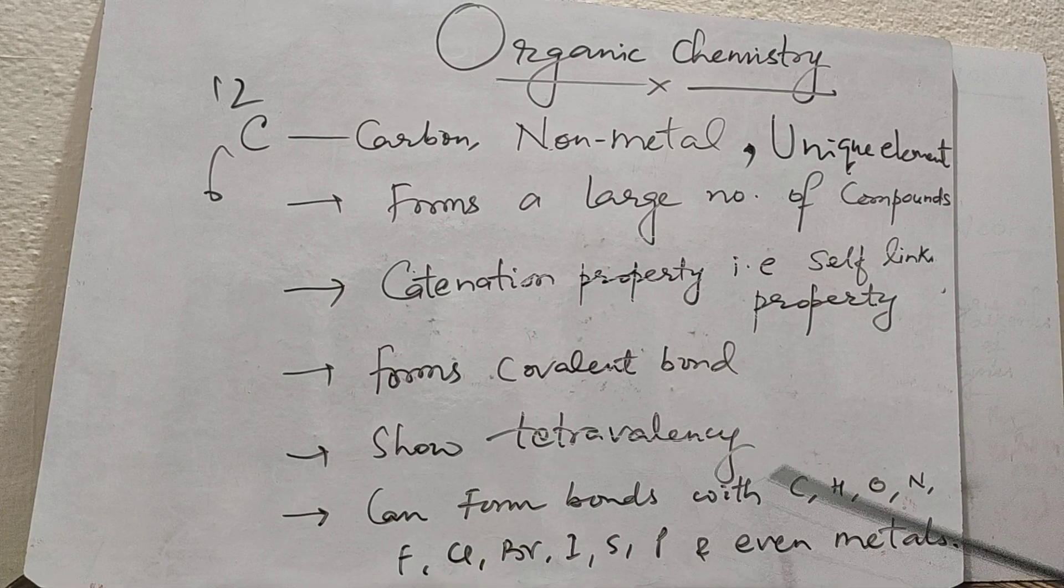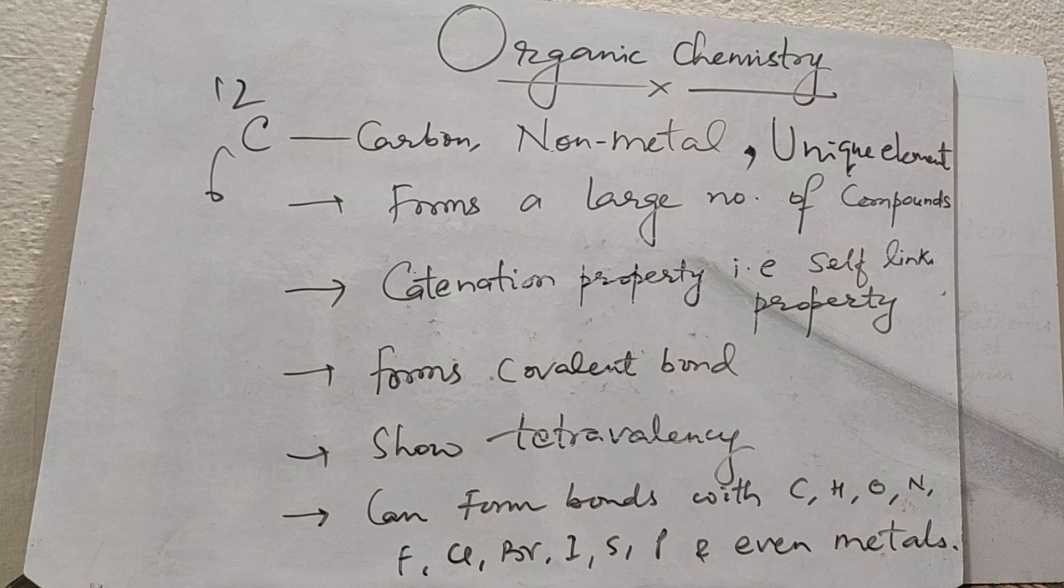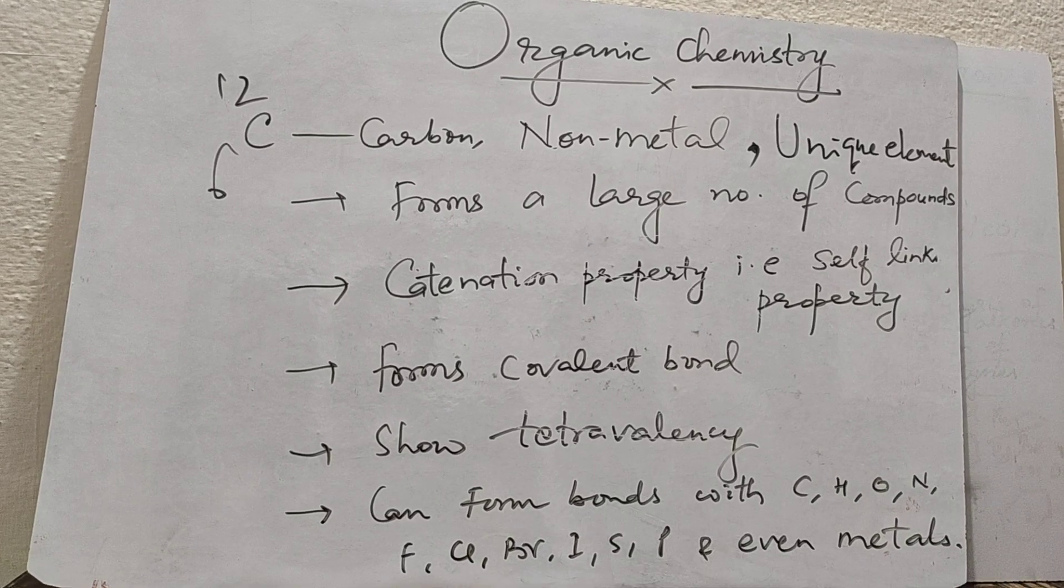Carbon can form bonds with carbon, hydrogen, oxygen, nitrogen, fluorine, chlorine, bromine, iodine, sulfur, and phosphorus.